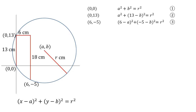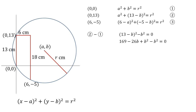We've now got three simultaneous equations and three unknowns — a, b, and r — so we should be able to solve these. I'm going to start by doing equation 2 minus equation 1. The reason is that the a² and r² terms will cancel, just leaving us with b. The a² terms cancel, leaving (13 - b)² - b² = 0. Expanding gives 169 - 26b + b² - b² = 0, so 169 - 26b = 0, meaning b = 169/26 = 13/2.